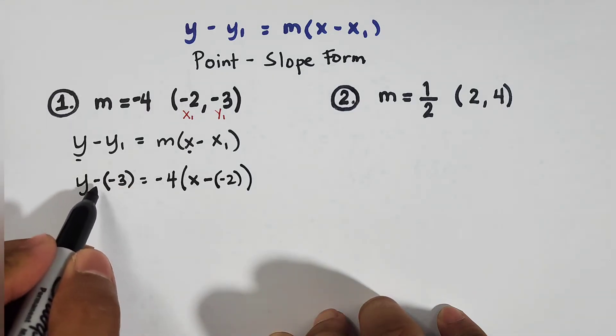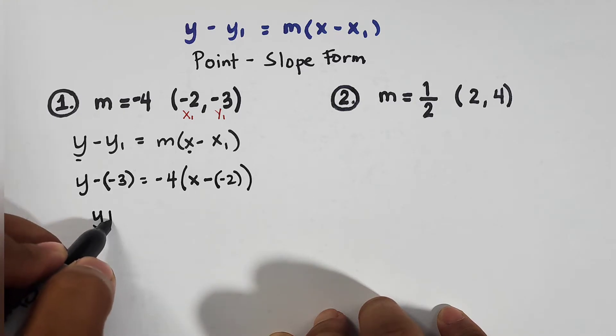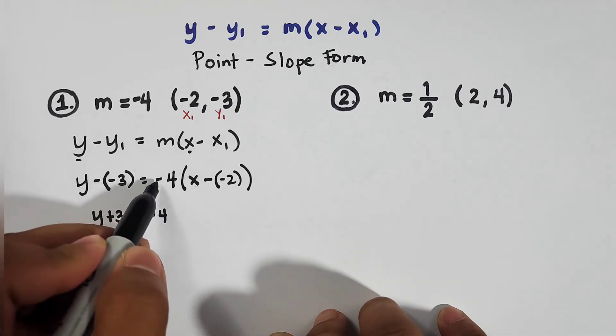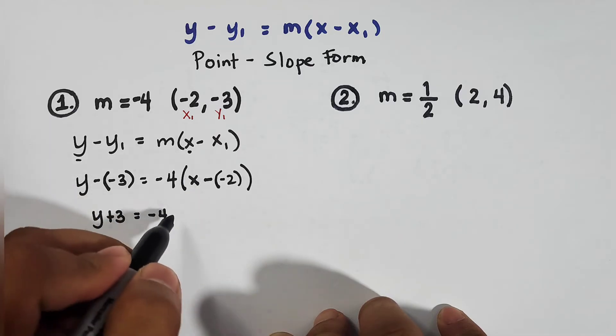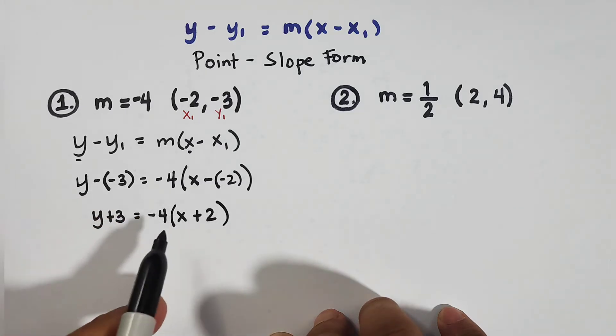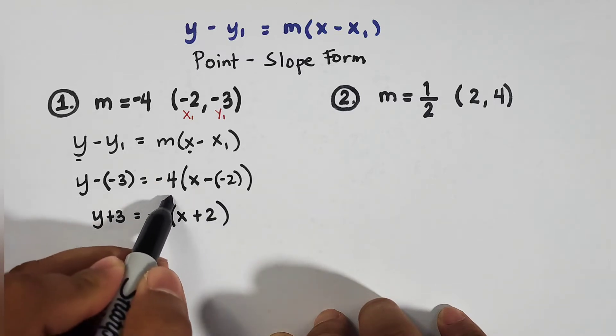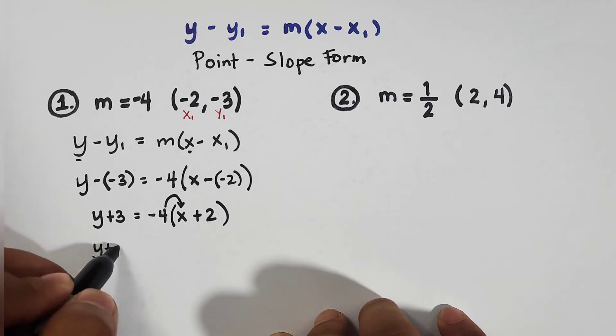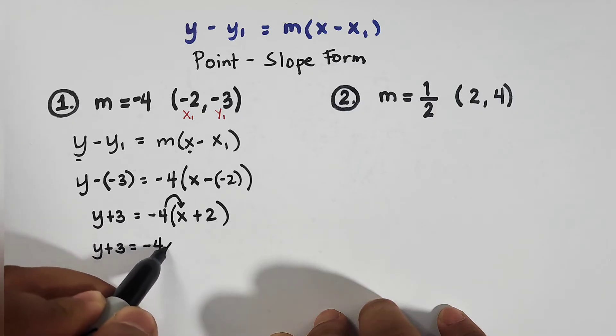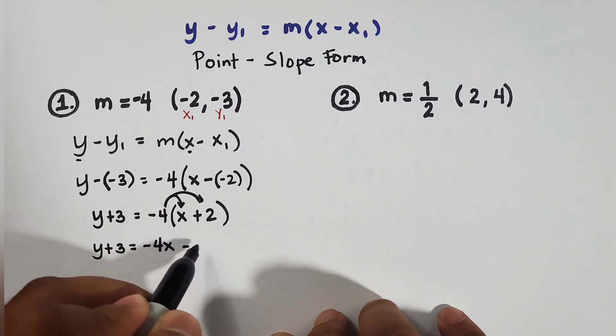Simplify the signs. Negative times negative is positive. So it will become y plus 3 equals negative 4. And this one, before multiplying negative 4 to x, simplify negative times negative. So this is times plus 2. As you can see, plus 2 came from negative times negative. And we're ready to use distributive property to multiply this. So we have y plus 3 equals negative 4 times x is negative 4x. Then negative 4 times 2, that is negative 8.